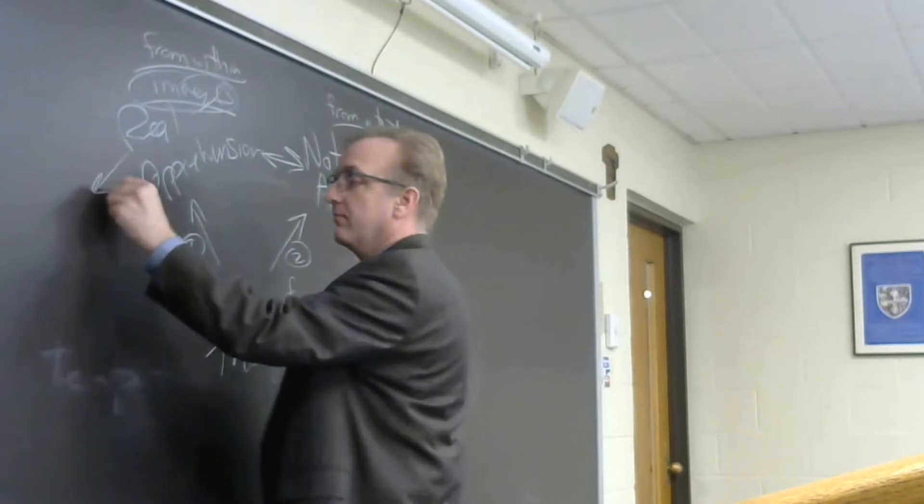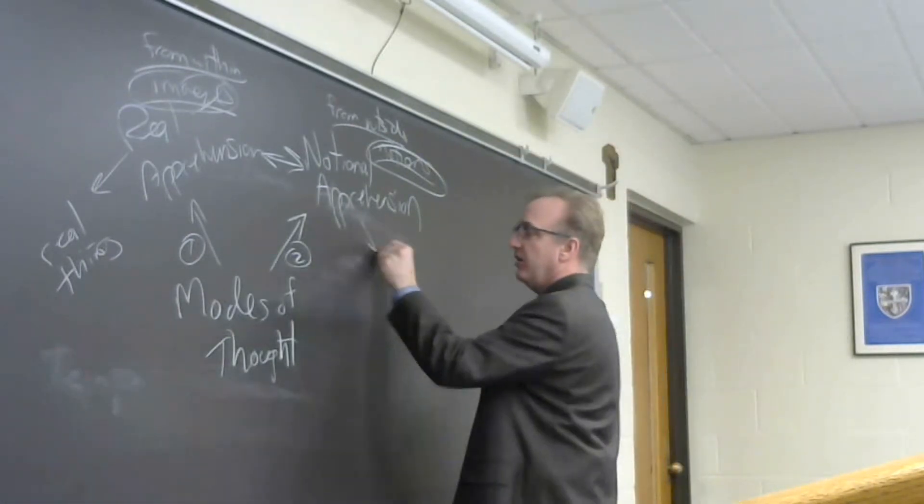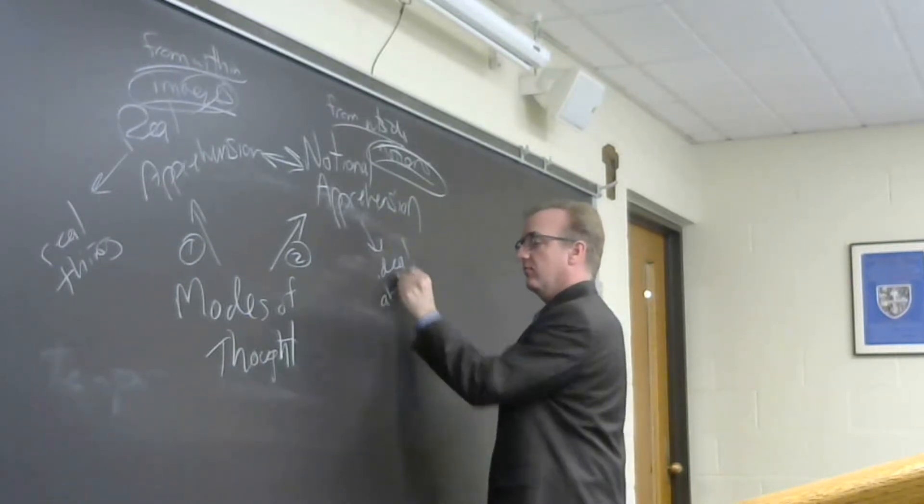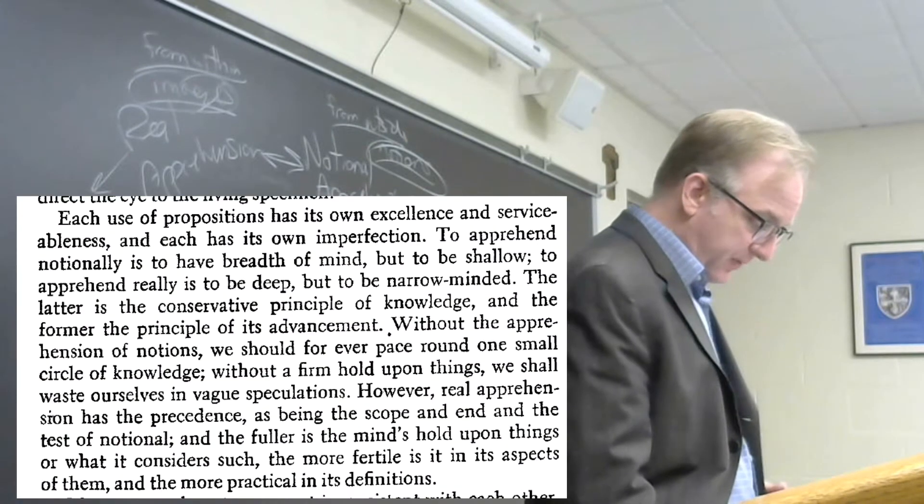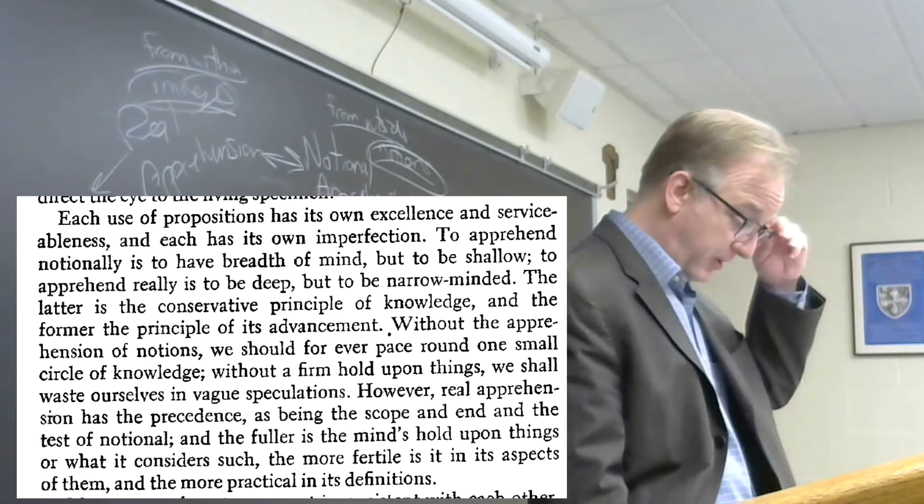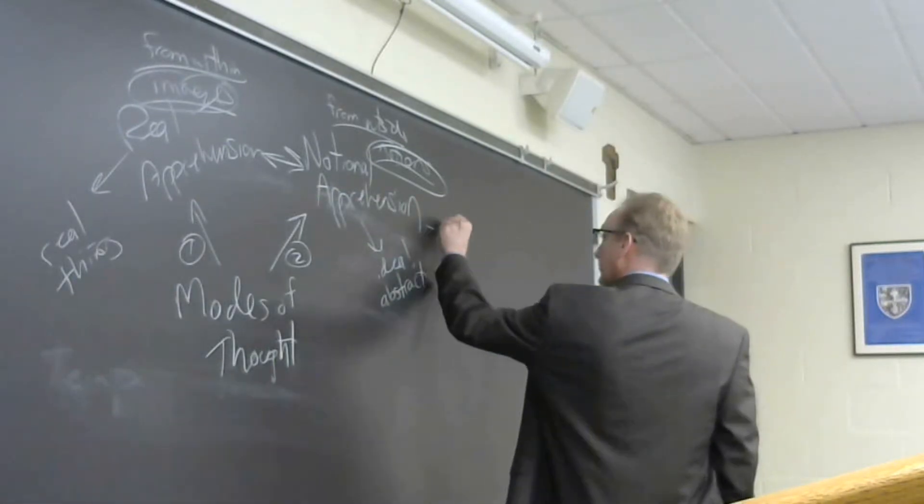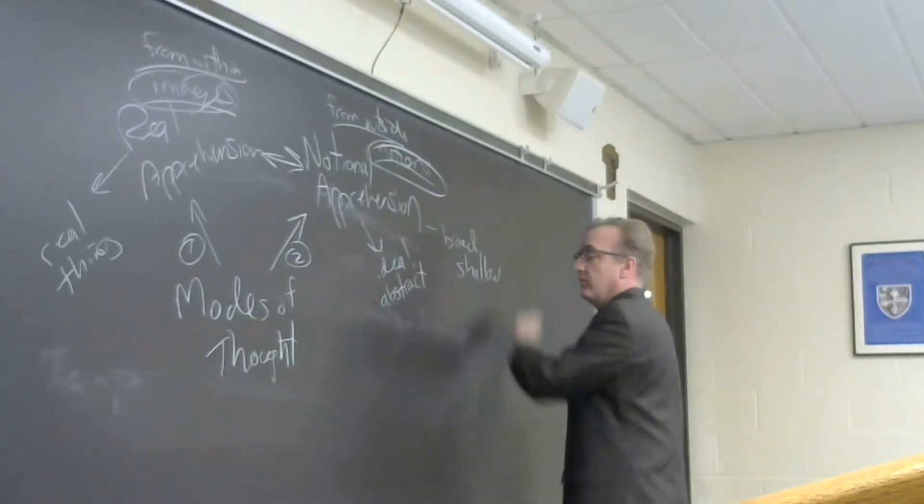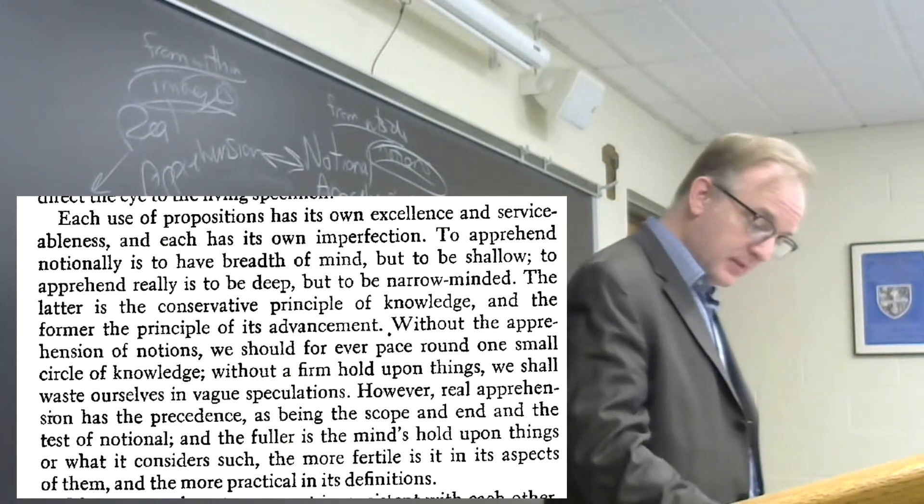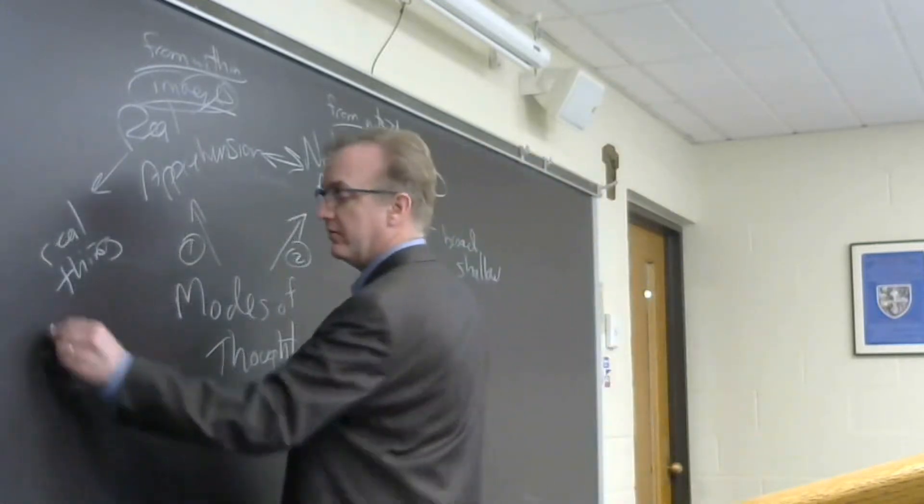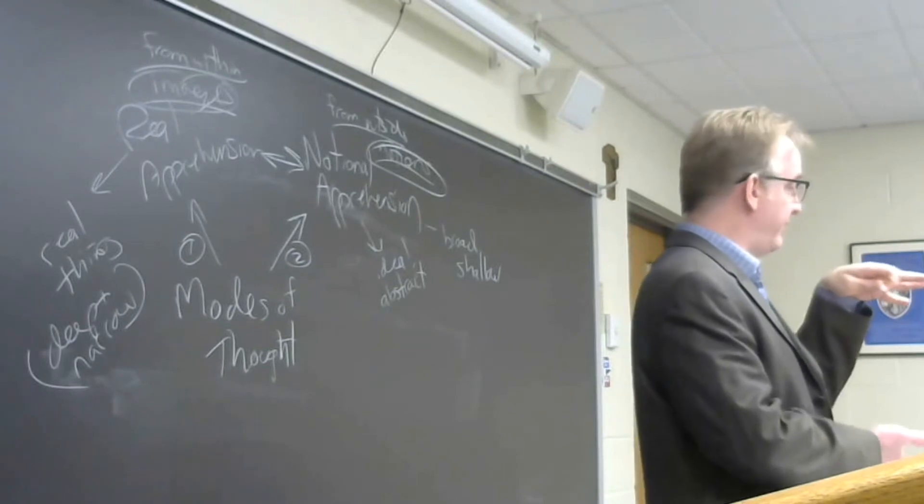We get the connection to the real thing, perhaps a kind of realism in the real apprehension here. So here, it seems something more in the ideal order and abstract. To apprehend notionally is to have breadth of mind, but to be shallow. This is wide-angle focus, taking in many things, but not deeply. To apprehend really is to be deep, but to be narrow-minded. Tighter focus, more depth of the grasp of the thing apprehended.